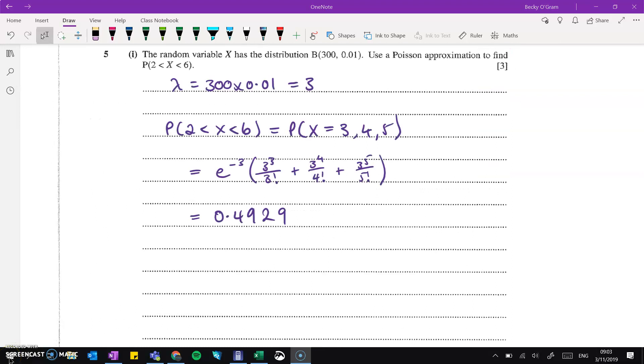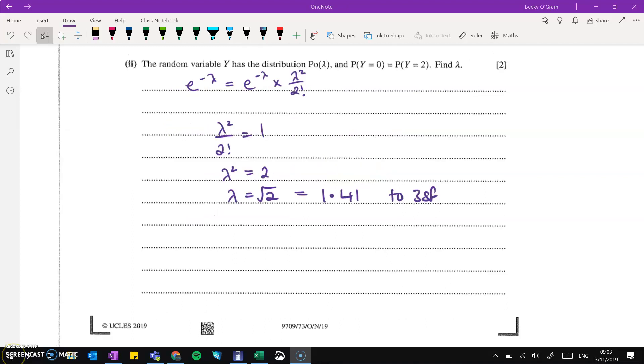We've got the random variable x with a binomial distribution and we want to use a Poisson approximation. So we do the number of trials times the probability to get us lambda and then just work through the Poisson calculations there. Part 2, we're told that the probability that y is 0 is the same as the probability that y is 2. So, and then work out lambda. So set those two parts of the Poisson formula as equal to each other and work through to solve for lambda.